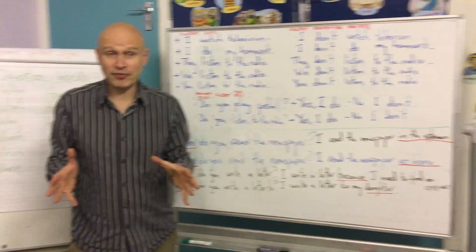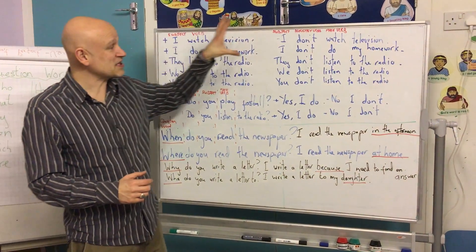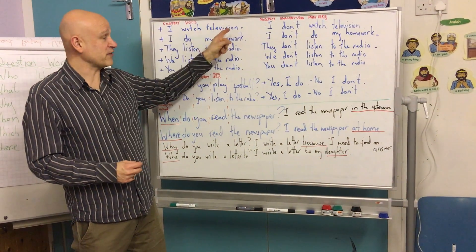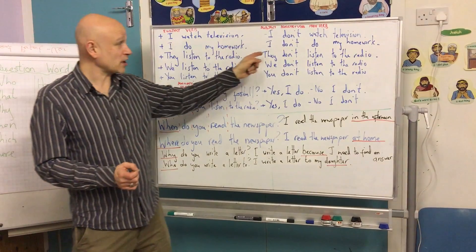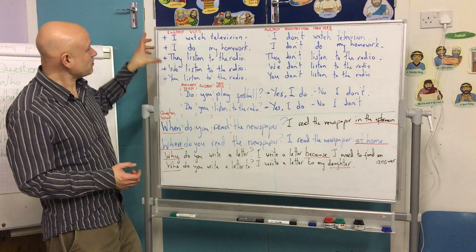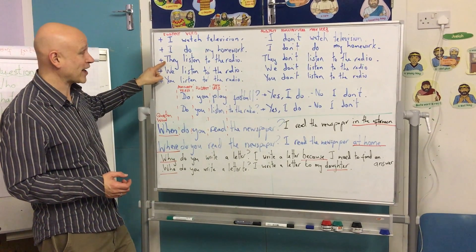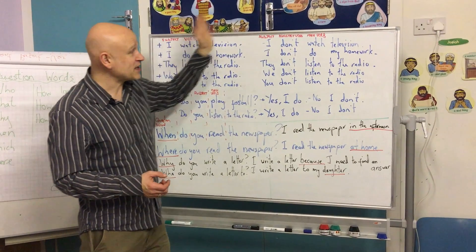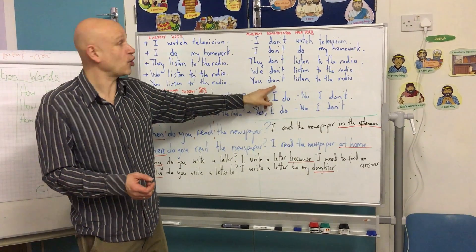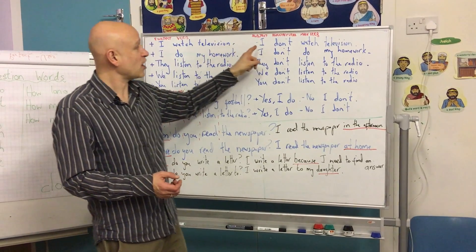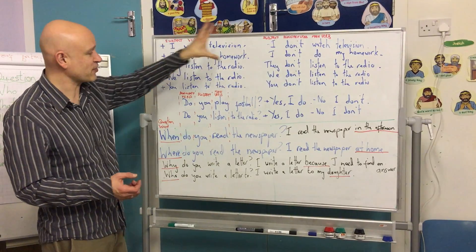So we were looking at present simple — information about us. We were looking at positive and negative sentences, like 'I watch television.' Negative: 'I don't watch television.' 'I do my homework.' 'I don't do my homework.' In the positive we always use subject: I, you, we, or they. In the negative we just add 'don't' or 'do not.' So 'I watch television' becomes 'I don't watch television.' This is the same for I, you, we, and they.